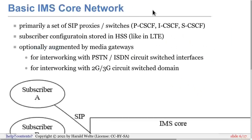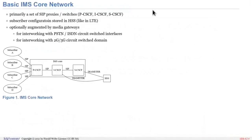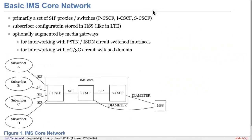So what is IMS? If we look at a basic IMS core network — and this is only a high-level overview, so lots of details are ignored — you basically have a set of SIP proxies, and also in cases back-to-back user agents or session border controllers. It's mainly the so-called CSCF network elements: there's the PCSCF, the ICSCF, and the SCSCF. Nobody thought about pronounceable acronyms in IMS, unlike in the radio access technologies.